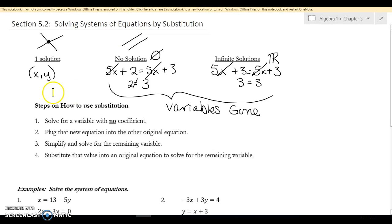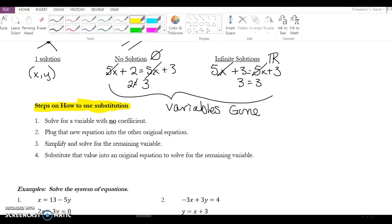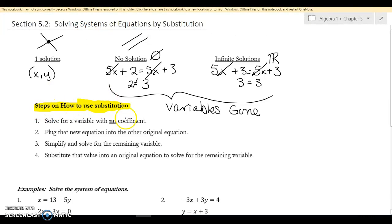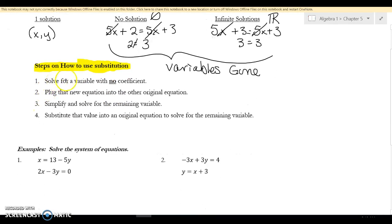Here's the steps that we need to follow to solve using substitution. Substitution is going to be a little awkward at first, but after you do a couple you'll understand what we're doing. The first thing you do is solve for a variable with no coefficient. What that means is I want a problem to either be an X equals something or a Y equals something. Then I'm going to plug it into the other equation, simplify and solve, and then plug that back in.